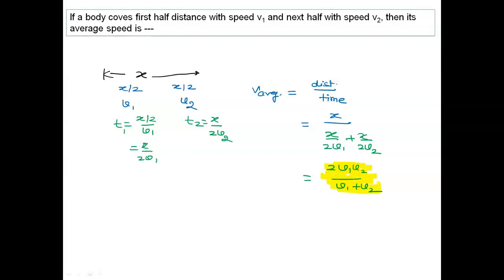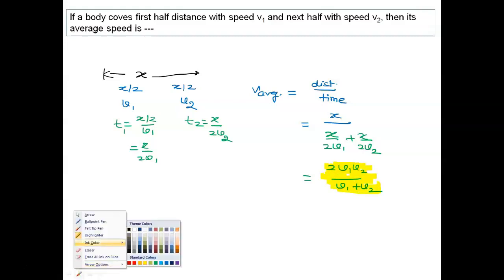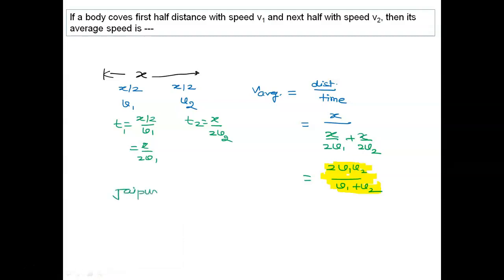Like, if I say I travel from Jaipur to Delhi and I travel toward this side with a speed 40 km per hour, and come back with a speed 60 km per hour, and I have to calculate the average speed of the journey.